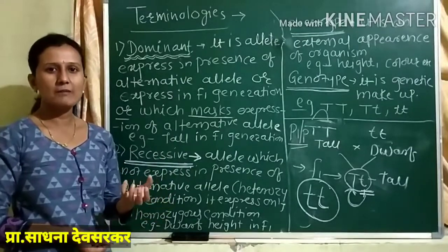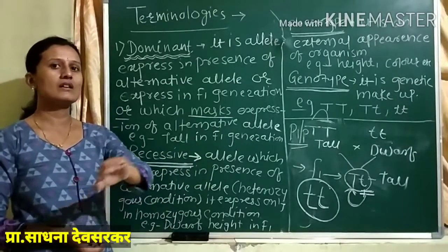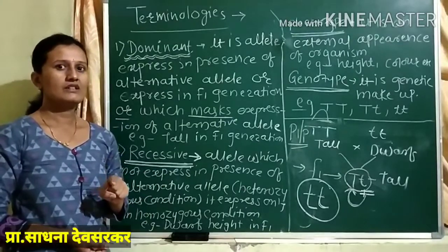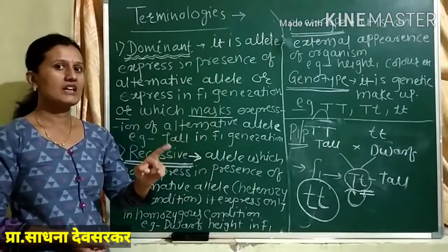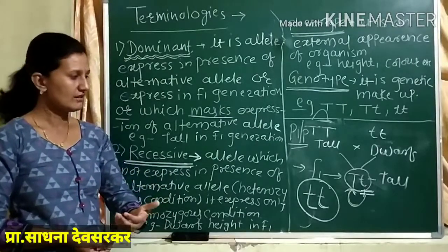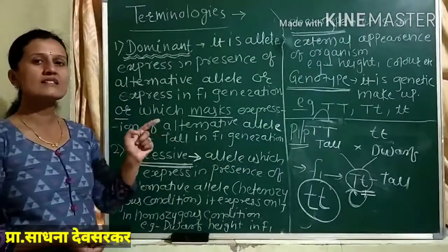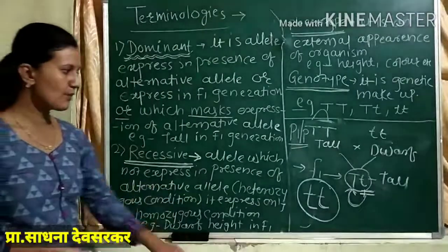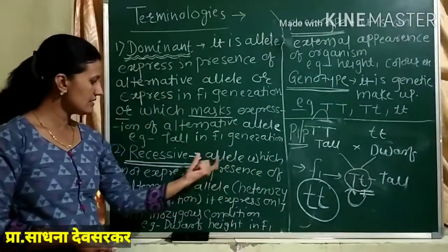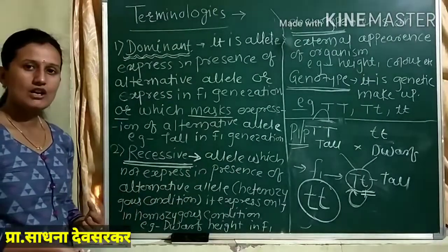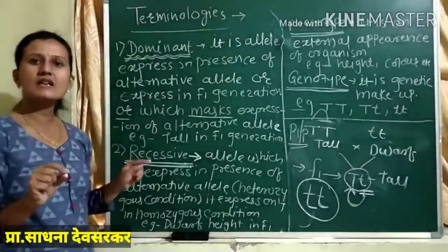Consider again that common example. In a homozygous condition: homo means same and zygous means the zygotic condition. The zygotic condition is made up of two similar alleles. And again repeating this definition: the allele which is not expressed in the presence of its alternative allele — it is not expressed in the presence of capital T, and which is not expressed in heterozygous condition.